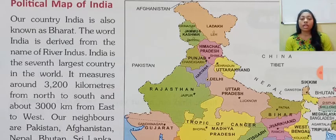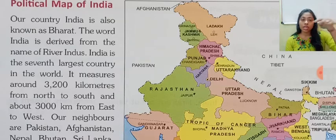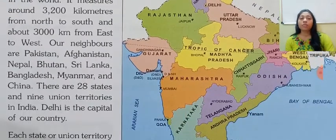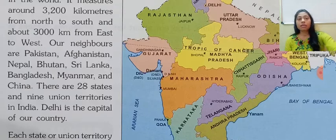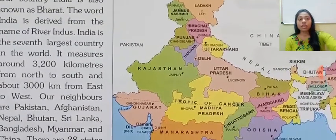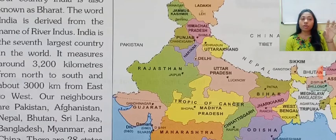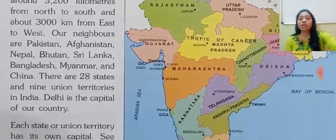Agar yahaan likha hua hai seventh largest country, toh pure world mein kitni countries hoti hain? Our neighbors are Pakistan, Afghanistan, Nepal, Bhutan, Sri Lanka, Bangladesh, Myanmar and China. Neighbors matlab agar aap map dekhenge toh India ke aas paas kya jo area hai, usmein jo countries hain, that is your neighboring countries.